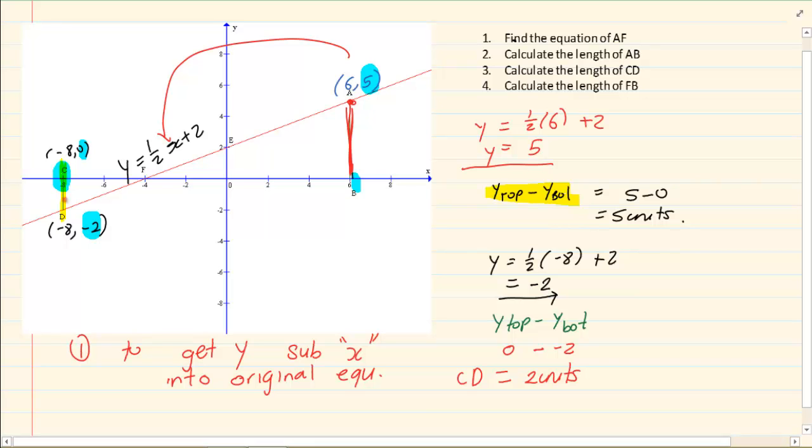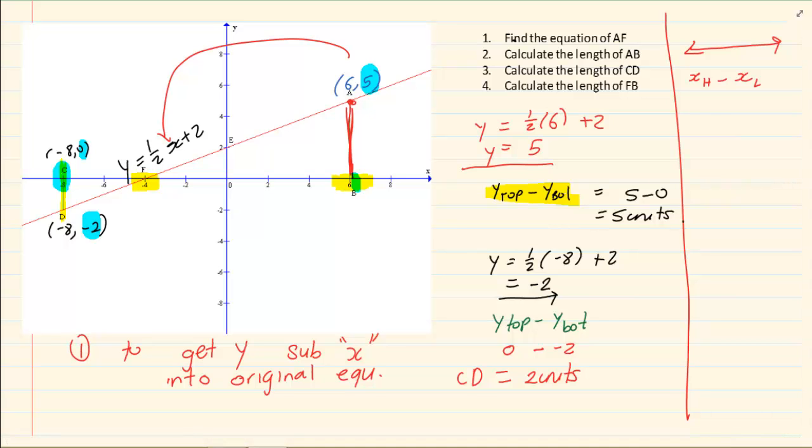Then they are asking what is the length of FB? FB is a length that is running horizontal. Now when we are working with horizontal lengths then we are going to take the x of the high minus x of the low. Now we already have the x values. We don't need to calculate anything. At B it's 6. At F it's -4. The high value is 6 minus (-4) which is equal to 10.